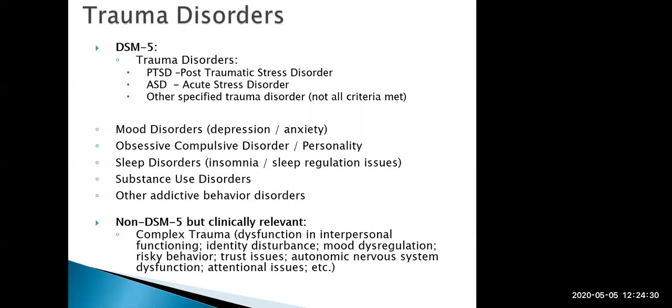Another clinically relevant condition not currently in the DSM-5 — but expected to be included at some point — is complex trauma, also called complex PTSD. It's endorsed by the National Center for PTSD. It requires complex childhood trauma caused by a caregiver, and results in a profile that looks like PTSD combined with features similar to borderline personality disorder, including dysfunction in interpersonal relationships, identity disturbance, mood dysregulation, adoption of risky behaviors, issues around trust, and attentional difficulties. They kind of look like a combination of borderline personality disorder, PTSD, and ADHD.